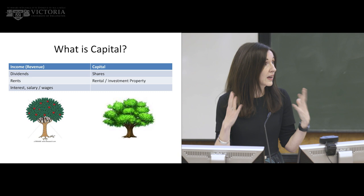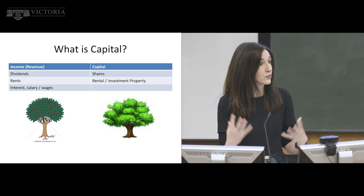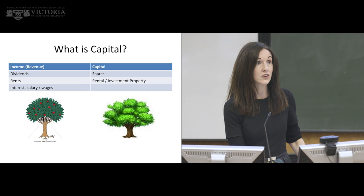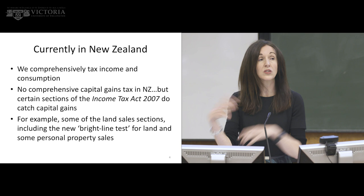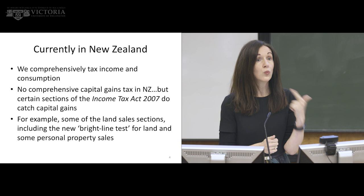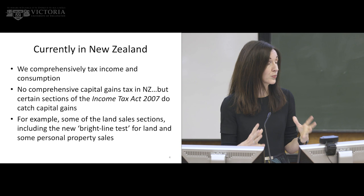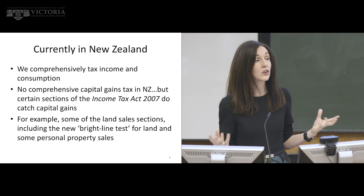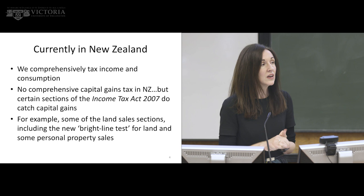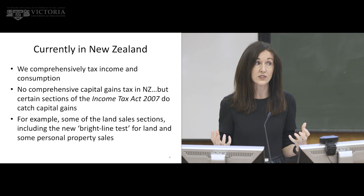In New Zealand, we tax income very well. If you've got interest, you'll be taxed on that; wages, salaries, all other types of income, we generally tend to tax quite comprehensively. There are really three ways in which we can tax: one is income, one is consumption, and one is capital. We tax income pretty comprehensively. We tax consumption — basically purchasing goods and services — even more comprehensively. Pretty much everything is subject to a consumption tax in New Zealand — that's our GST, our goods and services tax, with very few exclusions.